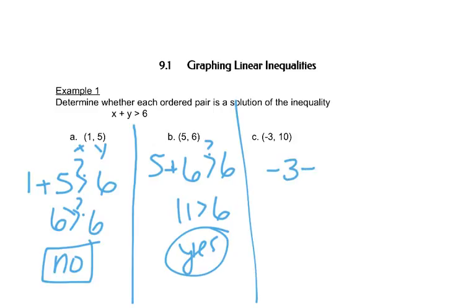Here we'll put negative 3 in for x and 10 in for y, and we're trying to ask ourselves, is that bigger than 6? Well, negative 3 plus 10 is 7, and 7 is bigger than 6, so this is also a solution.